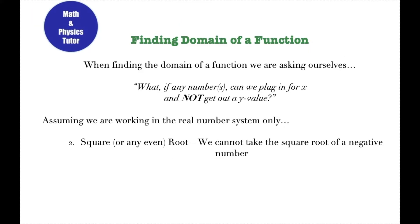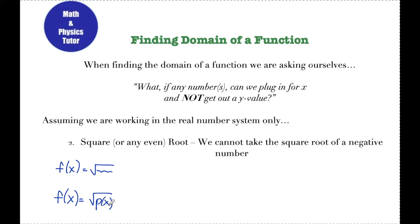The second case is if we have a square or even root. Since I can't take the square root of a negative number, if I had a function f of x equal to the square root of something, whatever is underneath that square root — if I plug something in for x — I need that expression to be greater than or equal to zero. So if f of x is the square root of some polynomial p of x, I take that polynomial, set it greater than or equal to zero, and solve. I can include zero because the square root of zero is zero, but anything less than zero I can't include.